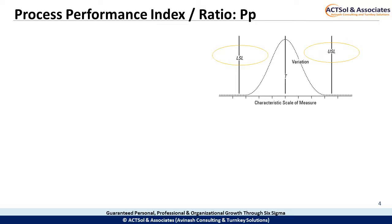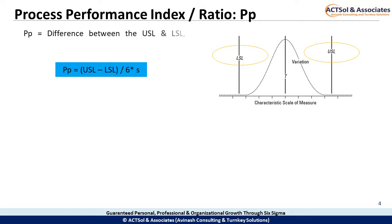Let us now learn to calculate the process capability or performance index PP. PP is equal to the difference between the USL and LSL divided by 6 times the standard deviation sigma — the fatness or dispersion of the bell curve.